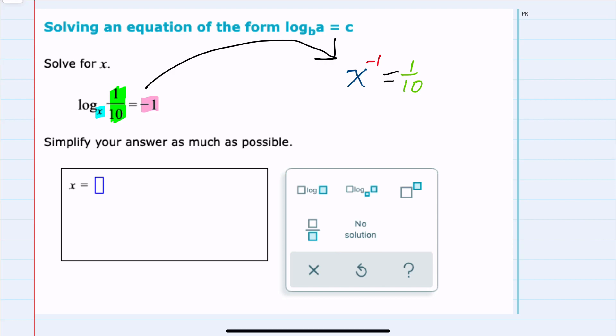Having written this in exponential form, it's often much easier to solve this. Here I see that I can simplify the left-hand side. To get rid of that negative exponent, I can write the left-hand side as 1 over x. That's the same as x to the negative 1.